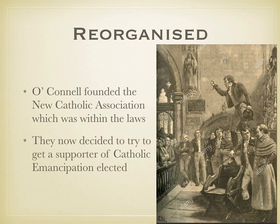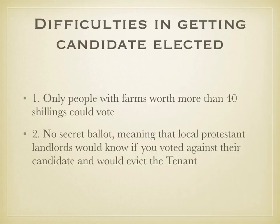When an election was called in 1826, the Catholic Association attempted to get a supporter of Catholic emancipation elected. This was no easy task, made even harder by the fact that only people with farms worth more than 40 shillings could vote. These were known as the 40 shilling holders, and there was no such thing as a secret ballot. This meant that if you voted against the local Protestant landlord — the usual candidate for Westminster — he would know and would evict the tenant farmer.